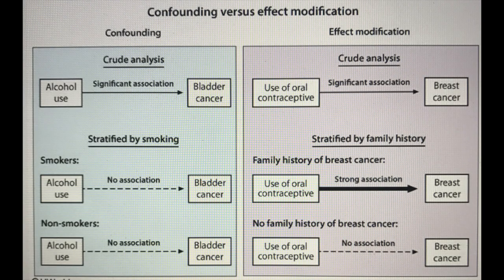The role of confounding or effect modification by an independent factor can be identified by stratified analysis. The association will disappear in the case of a confounding variable in the stratified analysis, while in the case of effect modification, the association will get stronger.